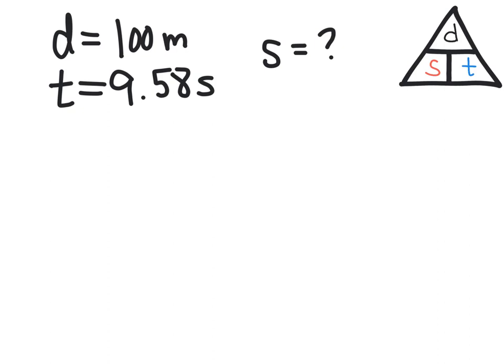The next step is to take a look at our speed-distance-time triangle. We're going to rewrite that formula as speed equals distance divided by time.